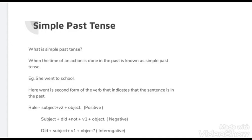Like if she goes to market, if we have to make it into past tense, simple past tense, there will be she went to market. That means 'go' second form will be 'went'. So here, she went to the market. Now, the point is if we have to make interrogative or negative, what will we do?